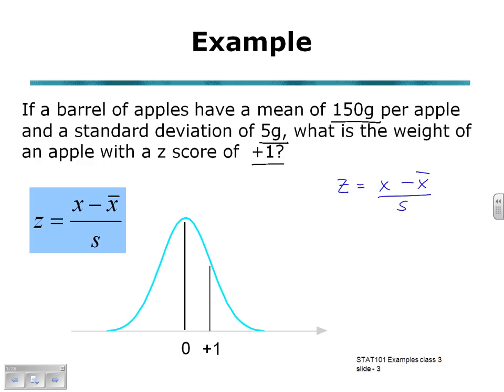From the question, we see that our Z-score is 1, positive 1. Our X value is what we're trying to determine in the question. Our mean, our sample mean, 150. And our sample standard deviation of 5.